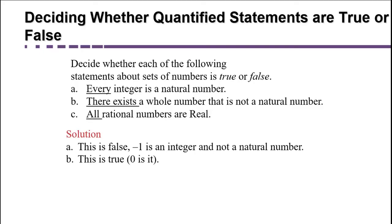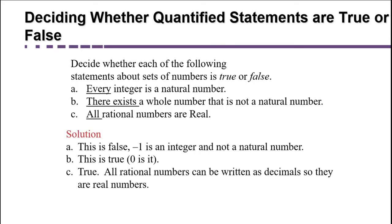Part C: All rational numbers are real. Are the rational numbers part of the real numbers? Yes — all rational numbers can be written as decimals, so they fit the definition of a real number. This statement is true.